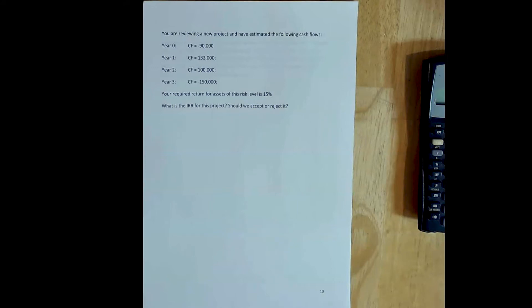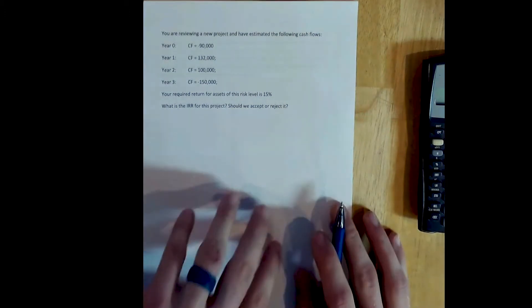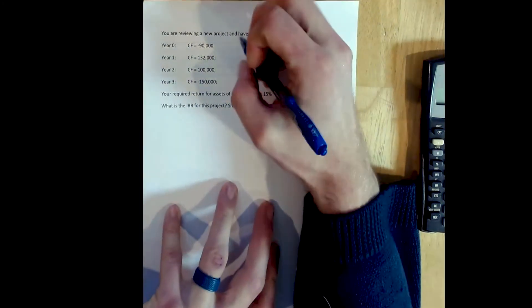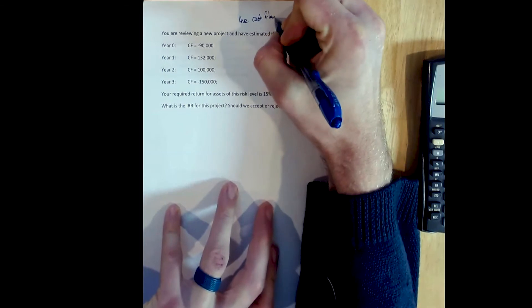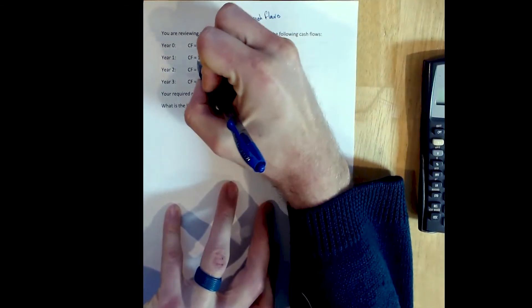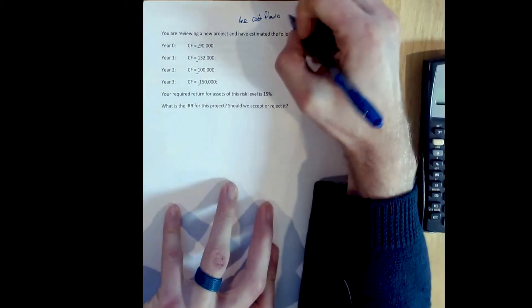An example of non-normal cash flows is below. Notice that in year zero for this project, we have our initial cost, as normally we might see in a regular project, then we have two years of positive cash flows, and finally, we finish, and our final cash flow is another cost, another negative cash flow. This is what we mean by non-normal. Non-normal cash flows mean the cash flow signs change more than once, and the signs here refer to the positive and negative signs in front of the cash flows.